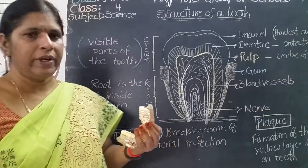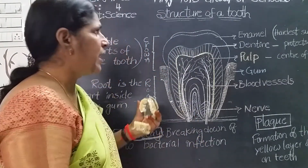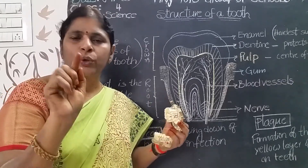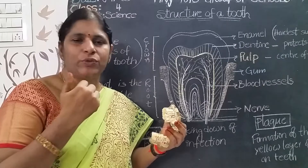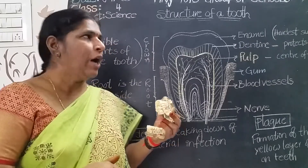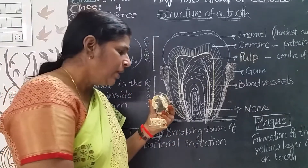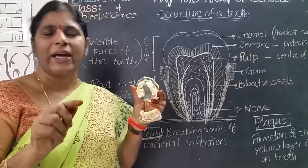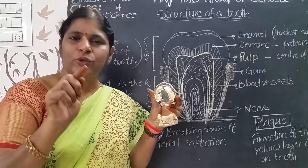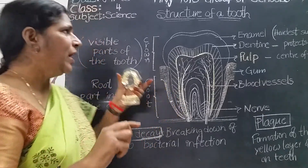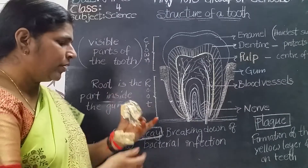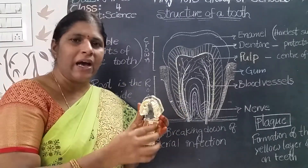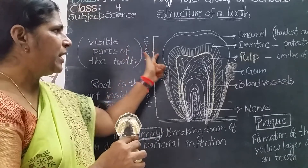These are all the four kinds of teeth we discussed very clearly. Now today we will discuss the structure of a tooth. Remember: tooth means singular, teeth means plural. Each tooth has two parts — crown and root.